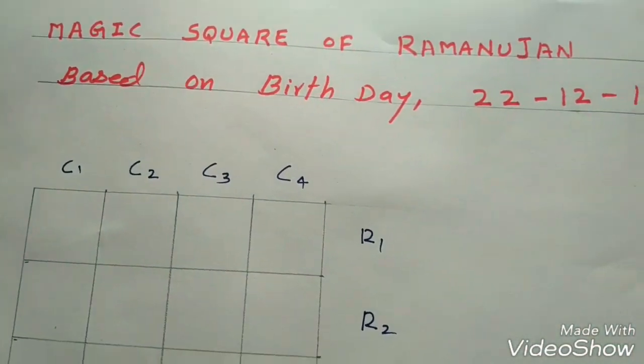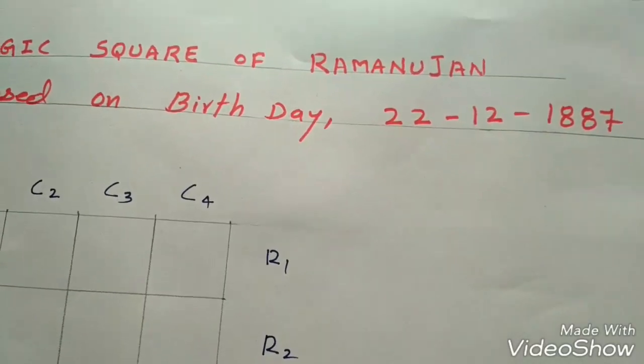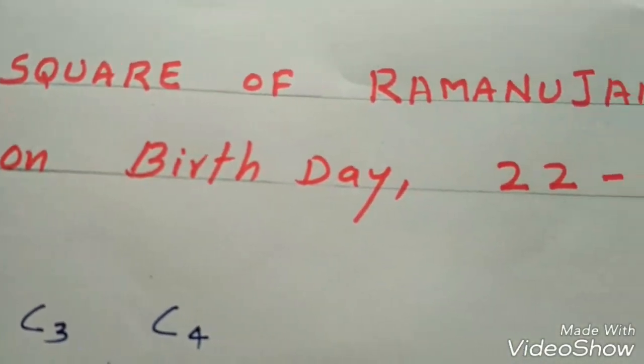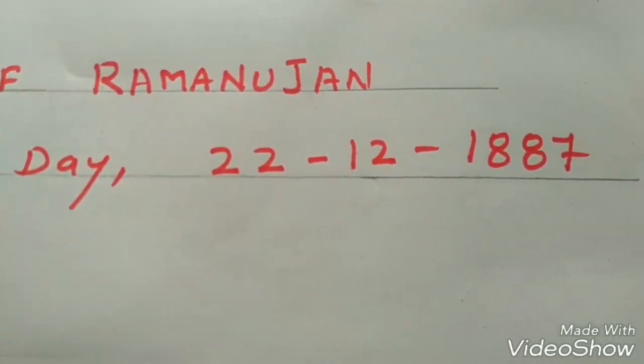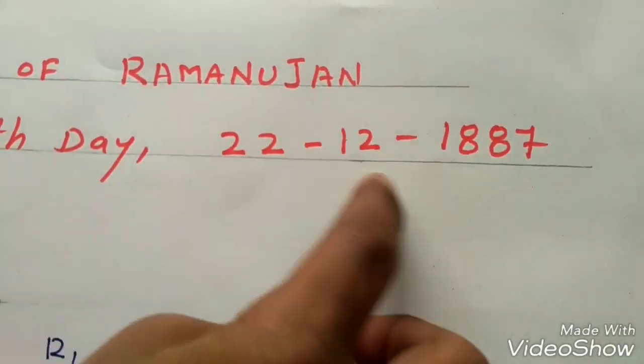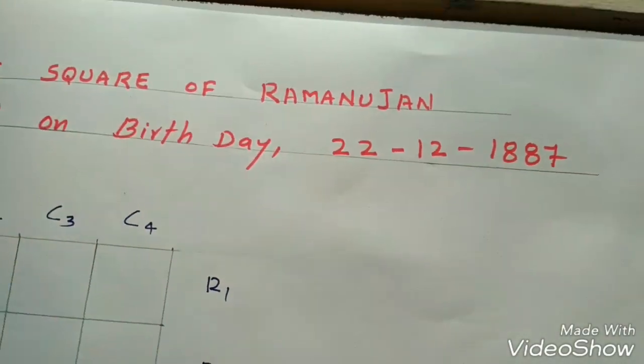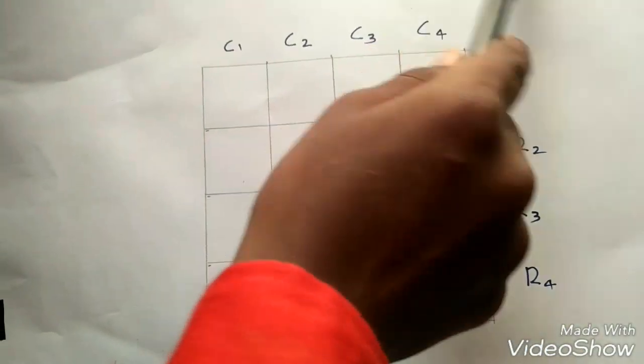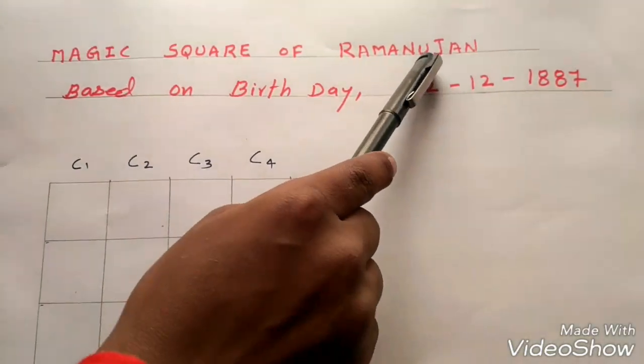He is a great Indian mathematician. He is born in Tamil Nadu, India on 22-12-1887. This is a 4x4 grid. The birthday of Ramanujan.